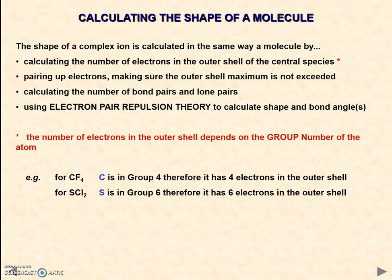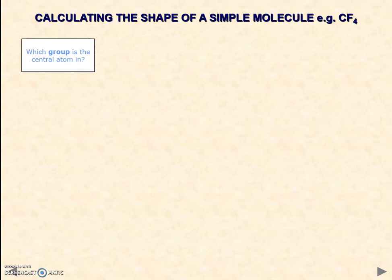We're going to look at this using a flowchart. The first thing to do is decide which group the central atom is in. For A level, the vast majority of simple molecules you will encounter will have the central atom as the first atom in the formula, or it'll be the only atom where there's one and there will be multiple of another atom. That's generally the rule of thumb.